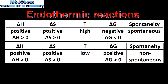In our next two examples delta H and delta S are both positive, so we have endothermic reactions with an increase in entropy. At a high temperature delta G will be negative and the reaction will be spontaneous. At low temperature delta G will be positive and the reaction will be non-spontaneous.